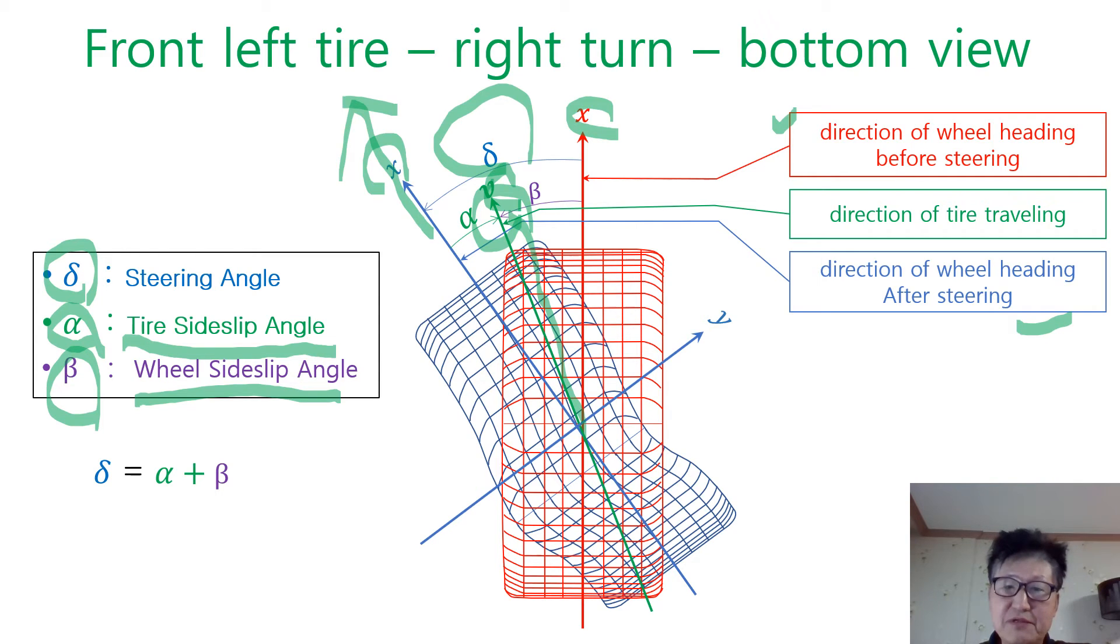Because of tire side slip angle due to tire deformation. Therefore, actual steering angle is wheel side slip angle beta rather than steering angle delta. Therefore, delta is equal to alpha plus beta.